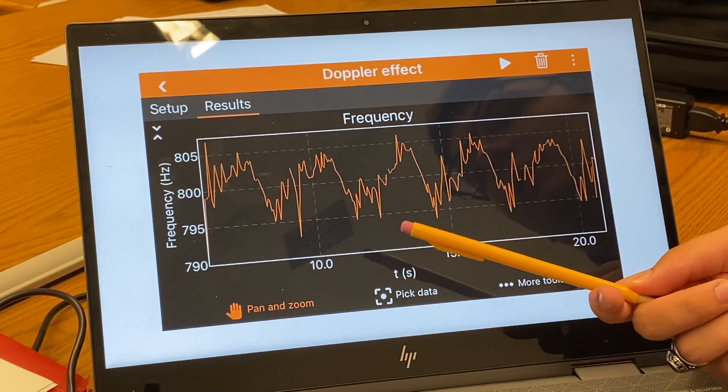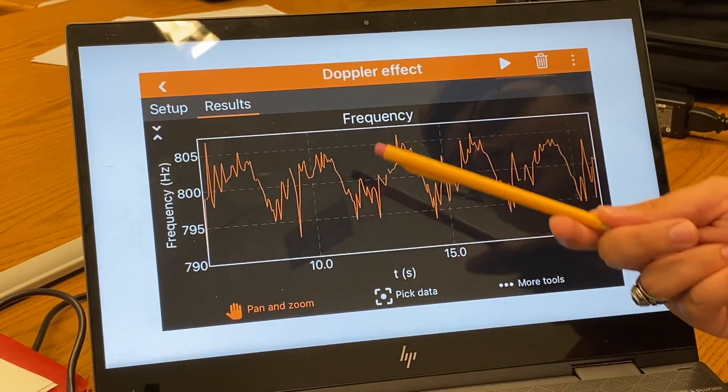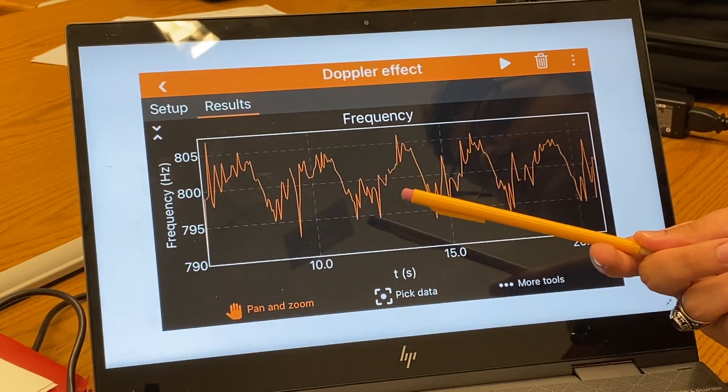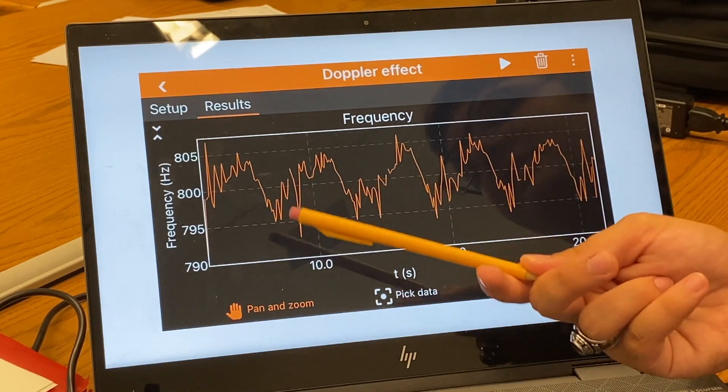Now how is this possible? Why is the phone recording higher and lower frequencies as it moves, when we know that we're only producing a sound of 800 Hz?